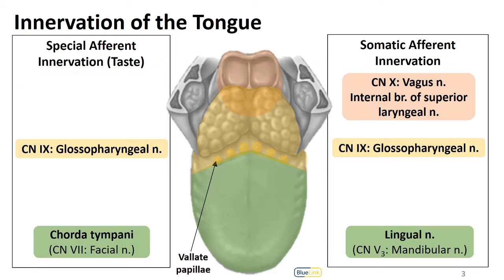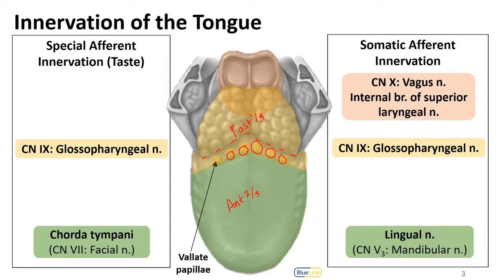When we think about the tongue, we want to divide it into two distinct parts: the anterior two-thirds and then the posterior one-third. In terms of the division line, rather than being the terminal sulcus that we can see here, it's actually these vallate papillae. These large circumvallate or vallate papillae are the boundary between the anterior and posterior parts of the tongue.